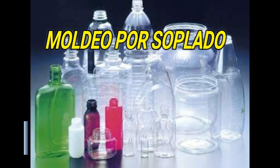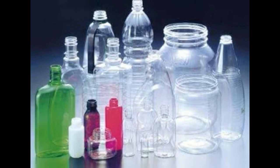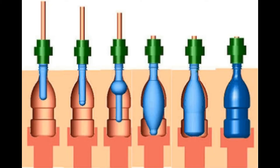Moldeo por soplado es un proceso usado para hacer formas huecas. Un cilindro plástico de paredes delgadas es extruido y luego cortado en el lugar que se desea. Luego el cilindro se coloca en un molde que se cierra sobre el polímero ablandado y le suprime su parte inferior, cortándola. Una corriente de aire o vapor es insuflado por el otro extremo y expande el material hasta llenar la cavidad. Luego el molde se enfría para el fraguado.